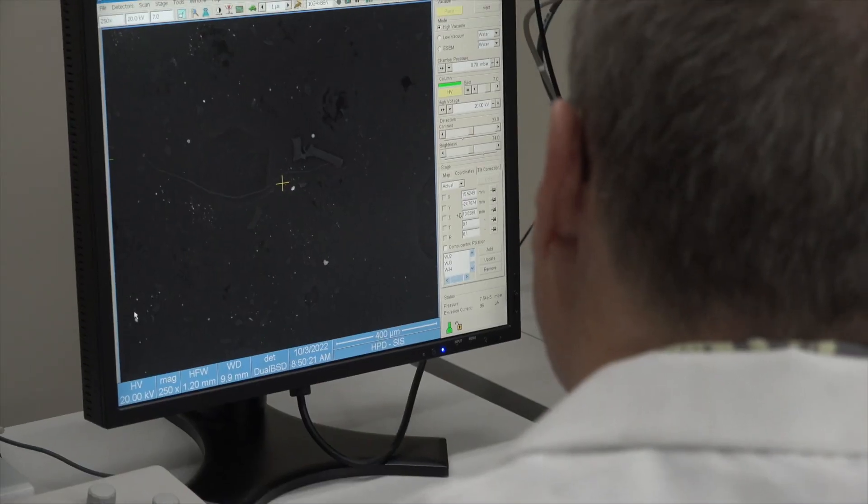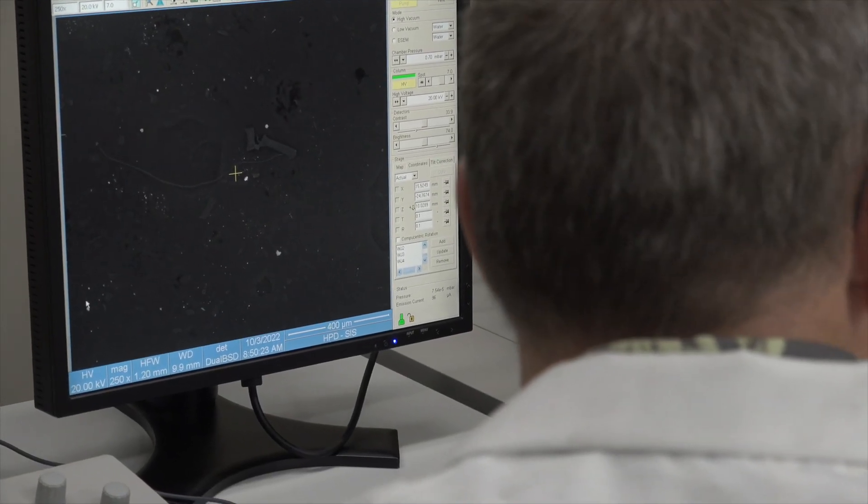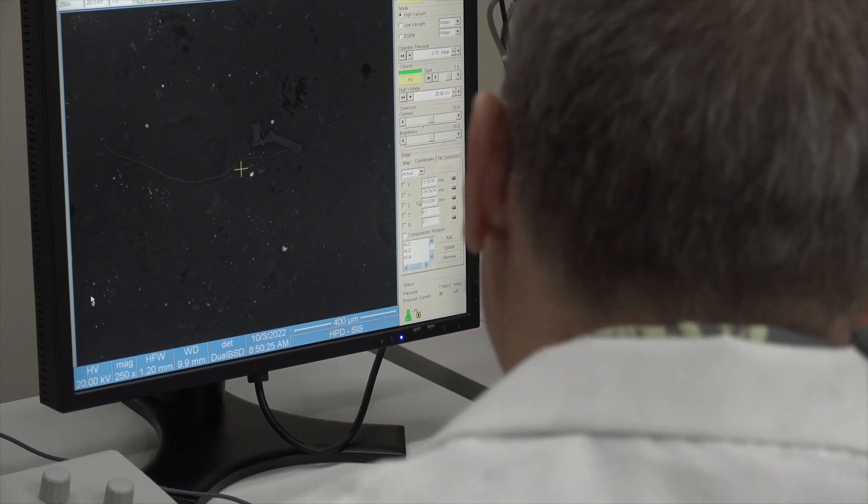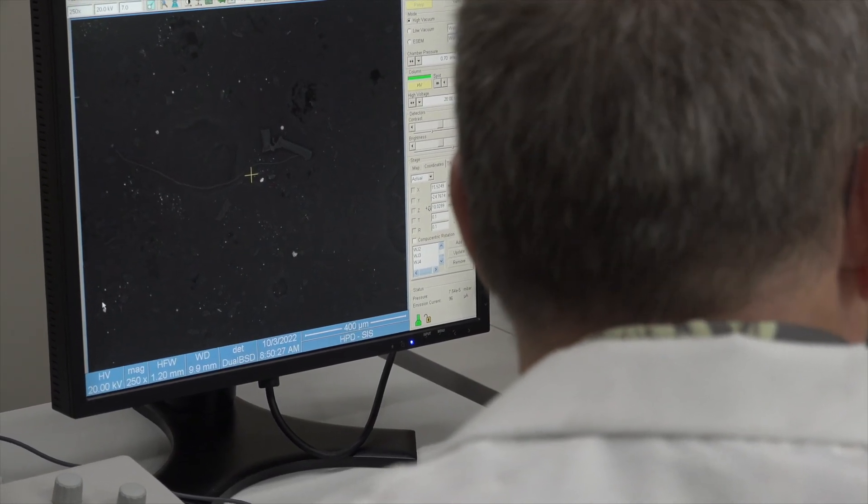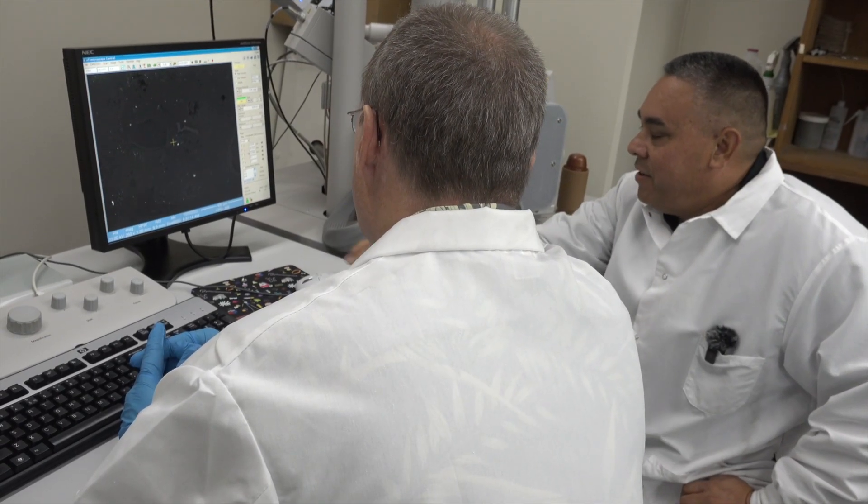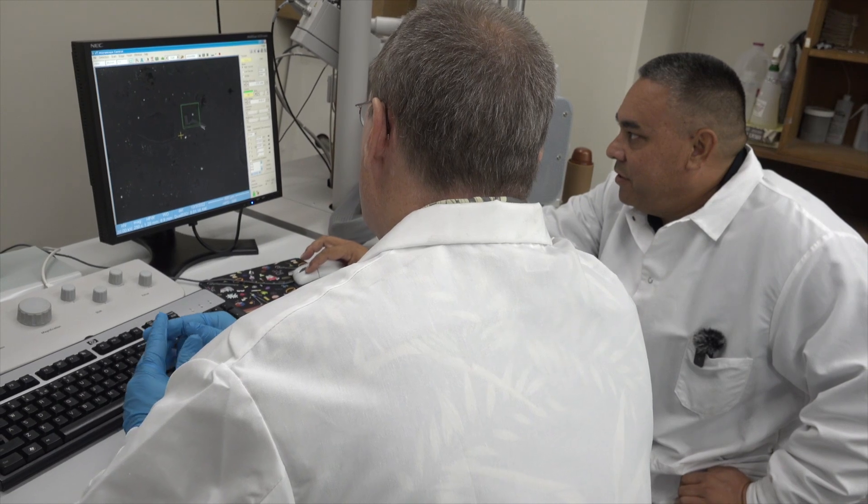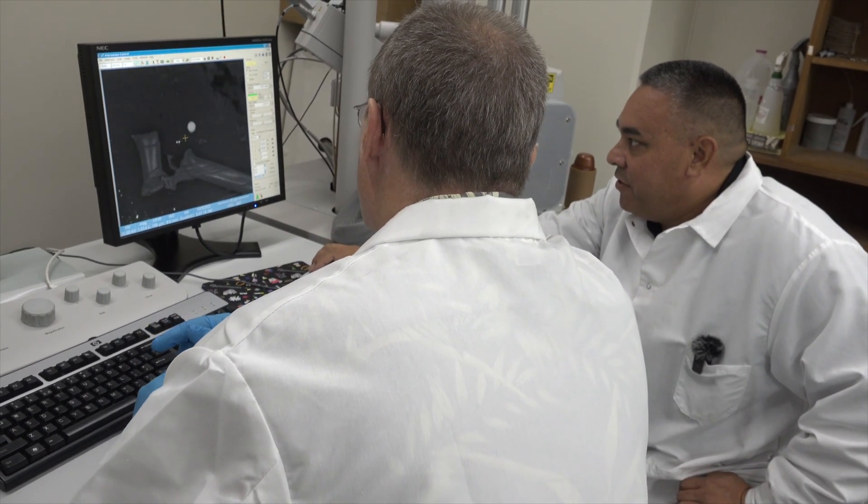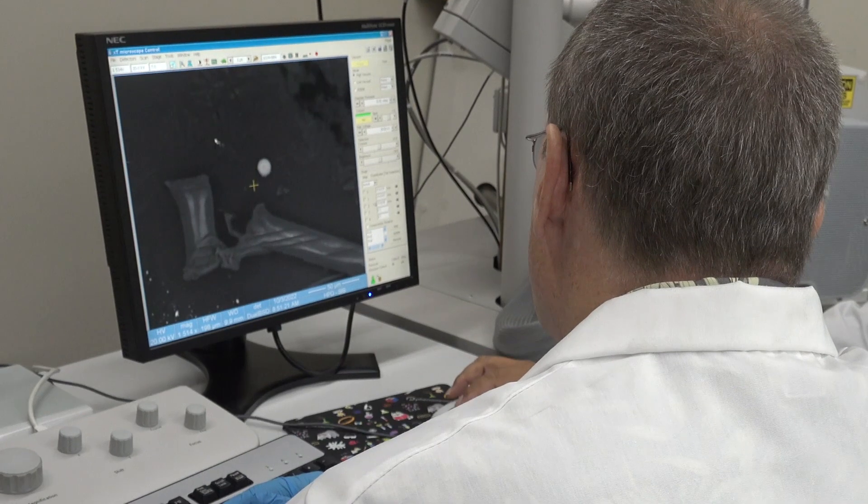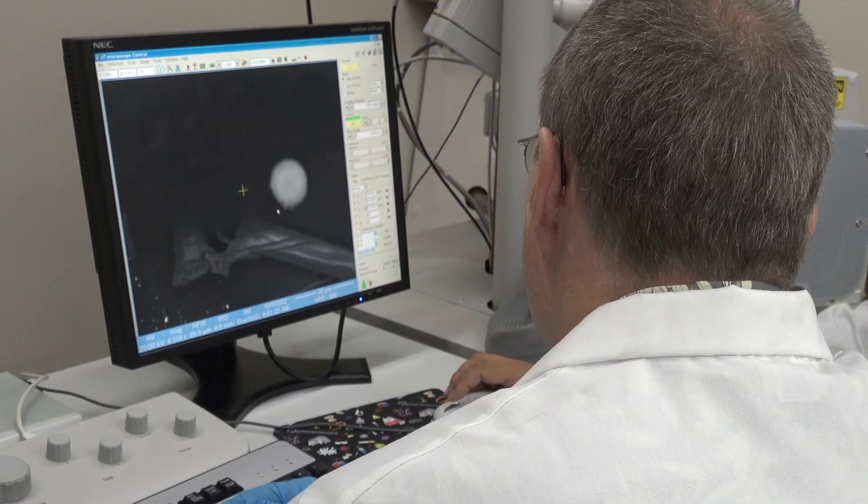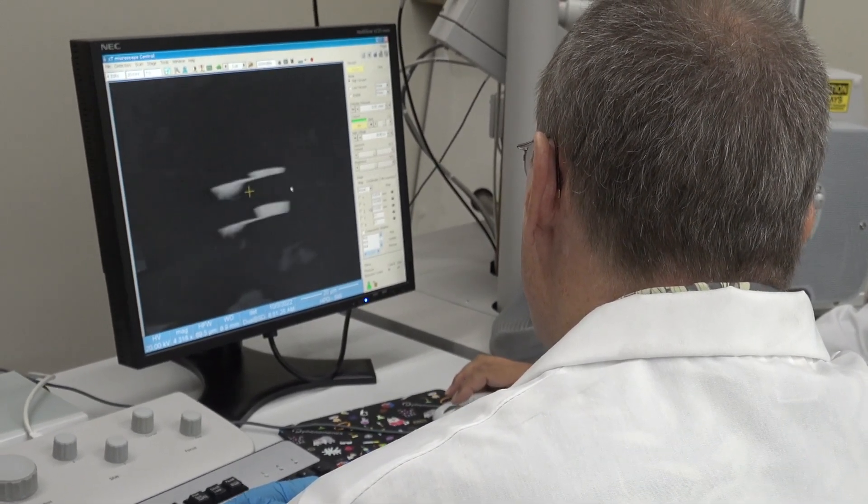So another thing that'll tip us off that something is gunshot residue is the shape of the particle. So the more spherical it is, the more likely to be gunshot residue. So if you see, you see on the screen kind of in the middle, there's a particle here that looks very spherical. There's one that we could consider a gunshot residue particle.